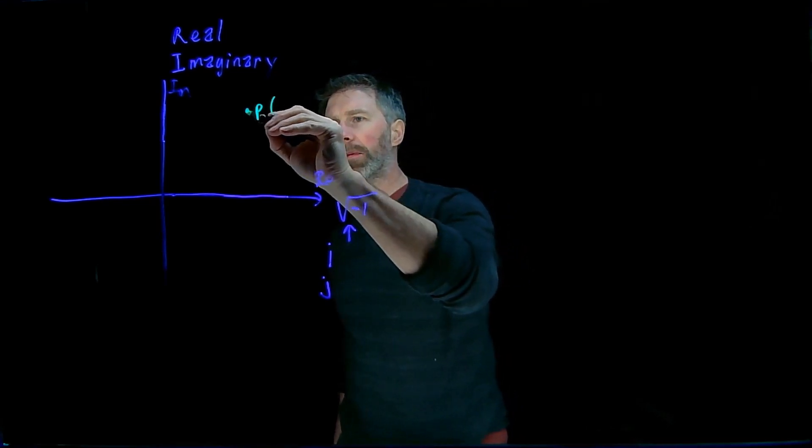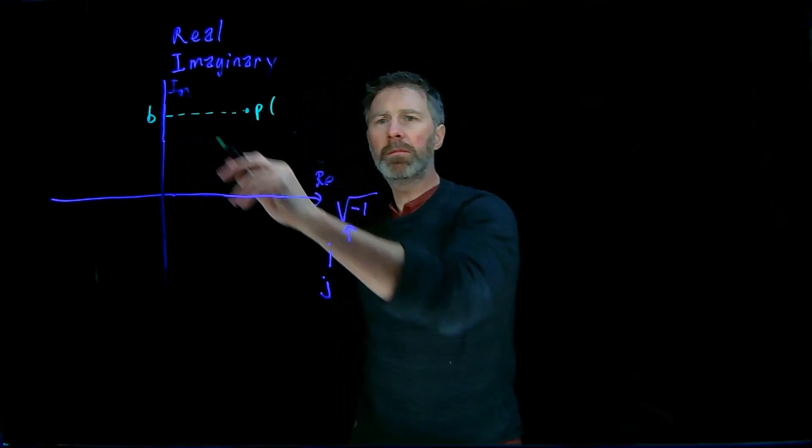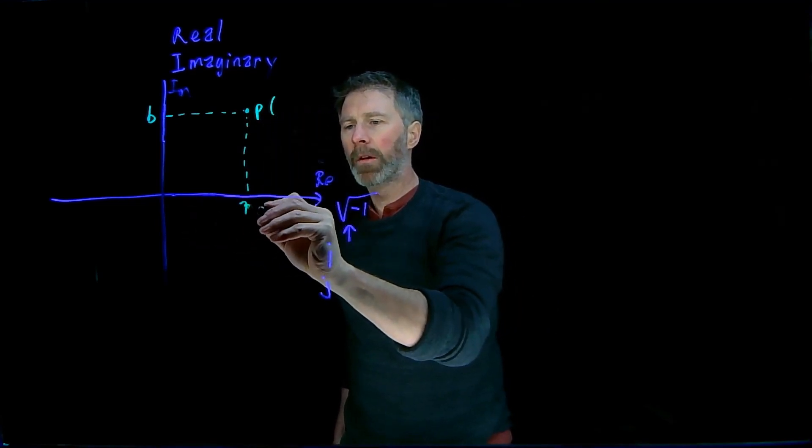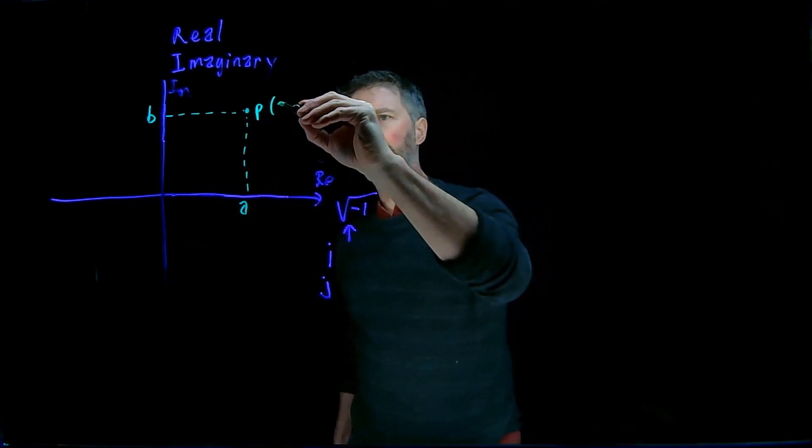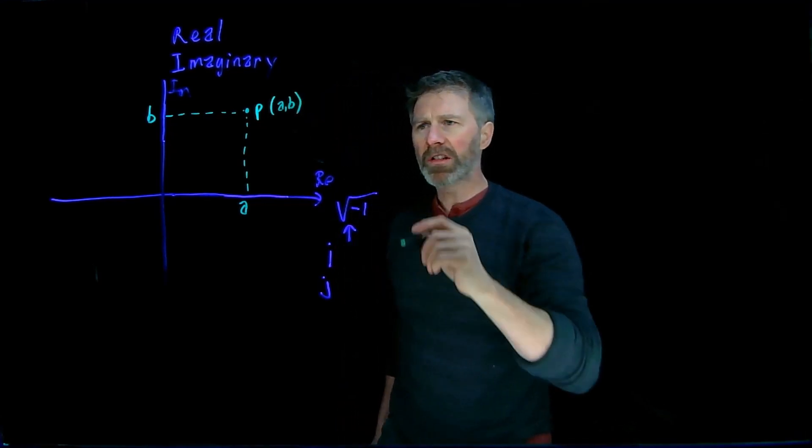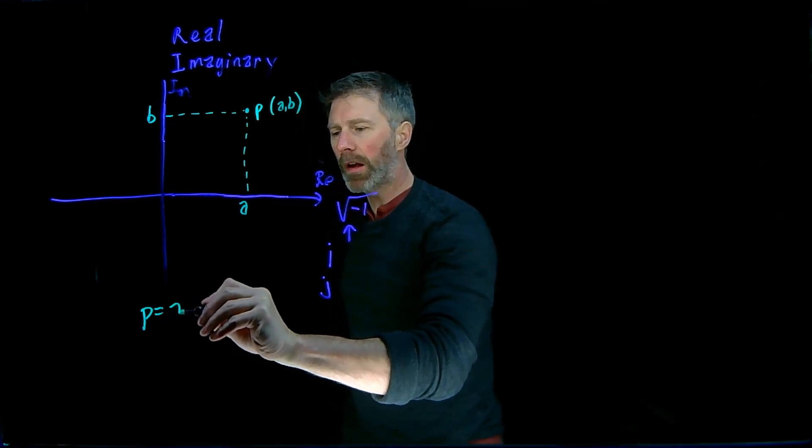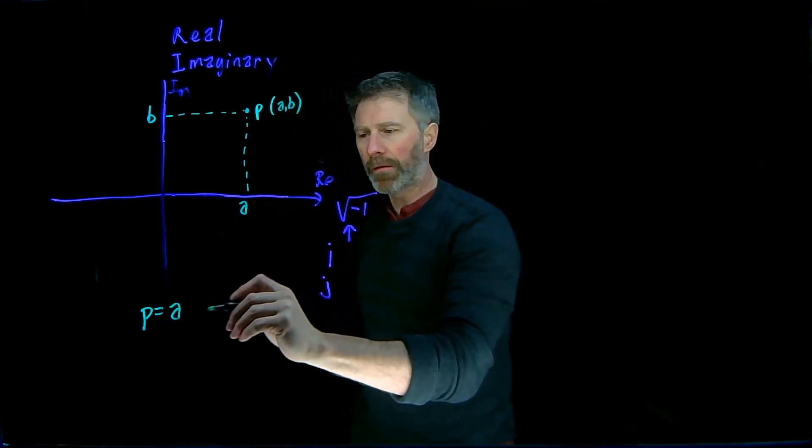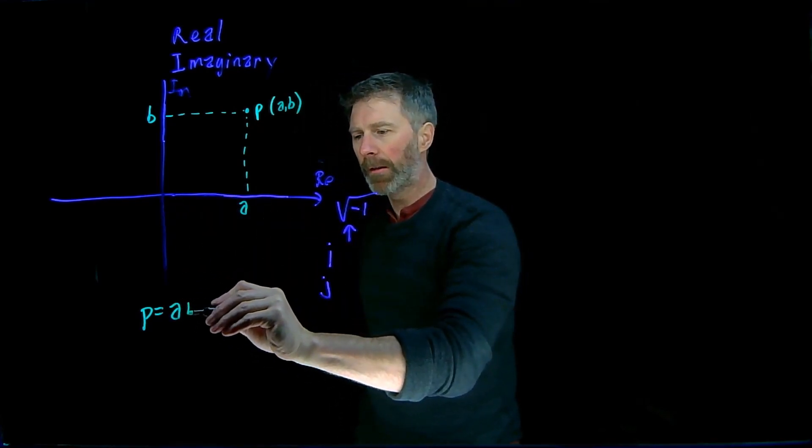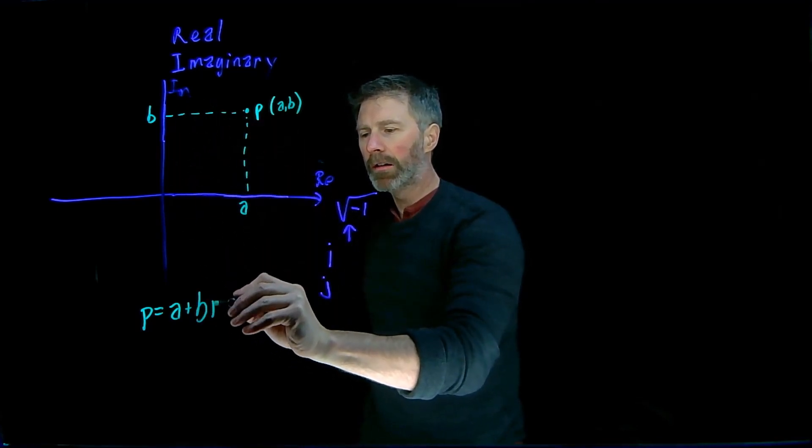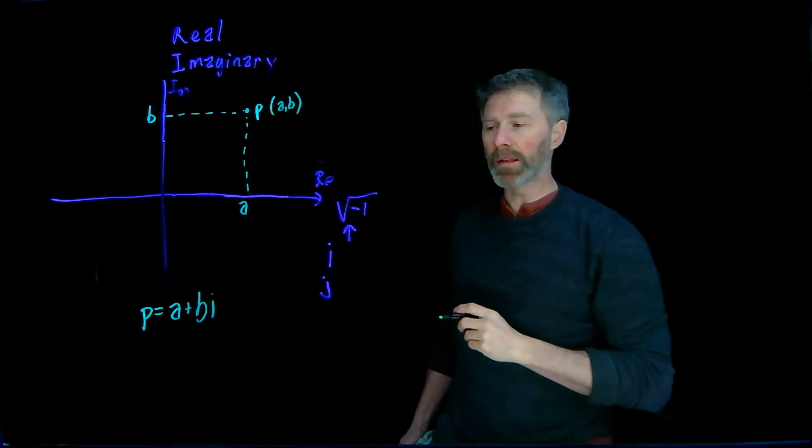So if this point P is up B in the imaginary axis and across A in the real axis, this point is AB. The representation of that point in the complex number notation is P is equal to A, which is the value of the real part, plus B, which is the value of the imaginary part, times I, to denote that it is the imaginary part.